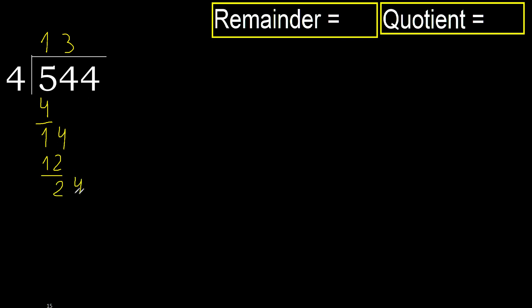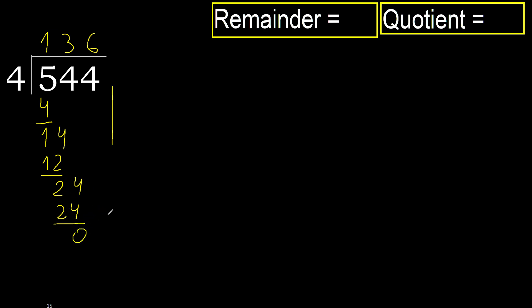Next. 24. 4 multiplied by 6, 24 is not greater. Subtract. Next. There is no number, therefore finish it.